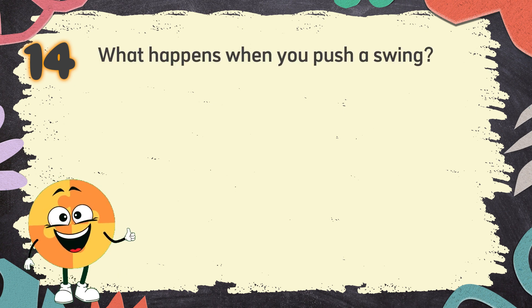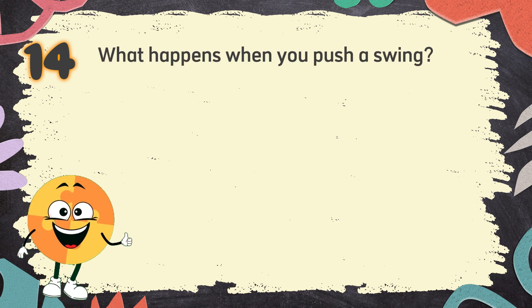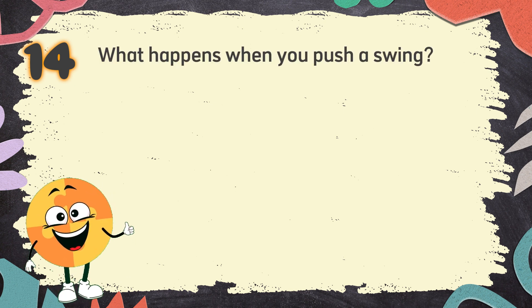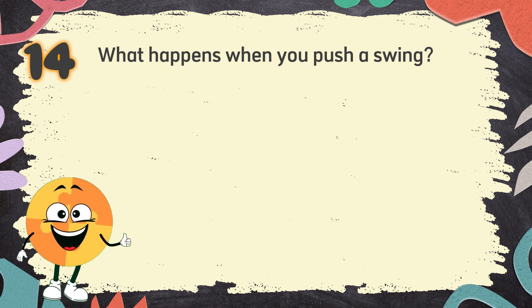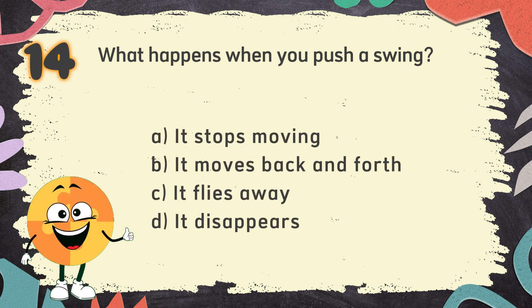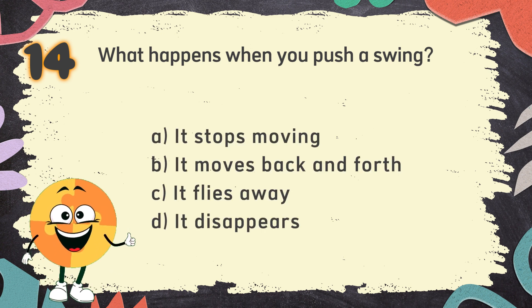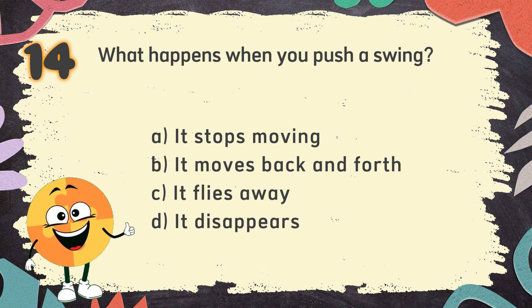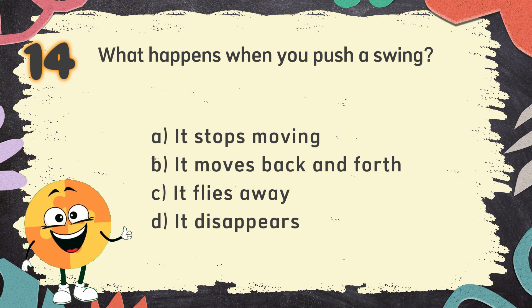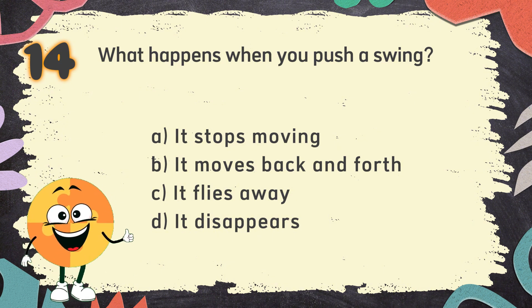Number 14. What happens when you push a swing? The choices are: A. It stops moving, B. It moves back and forth, C. It flies away, D. It disappears.